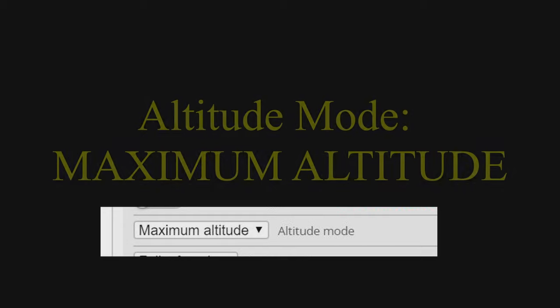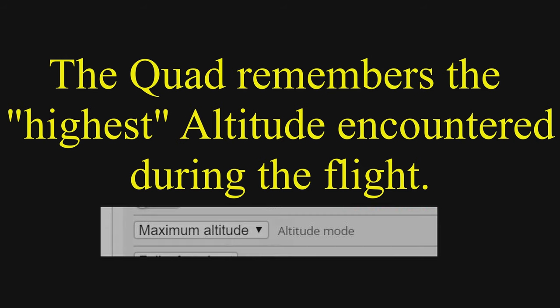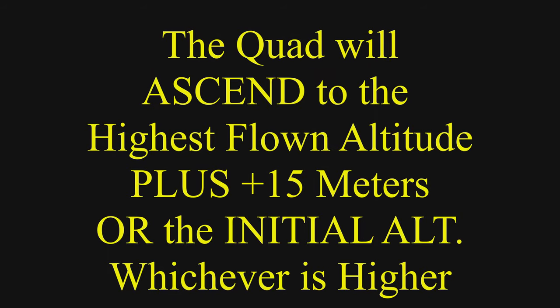Let's look at the ideal settings for GPS rescue when flying up hills. When the altitude mode is set to maximum altitude, the quad keeps track of the highest altitude obtained during the flight. When GPS rescue kicks in, it flies to that maximum altitude or the initial altitude, whichever is higher.